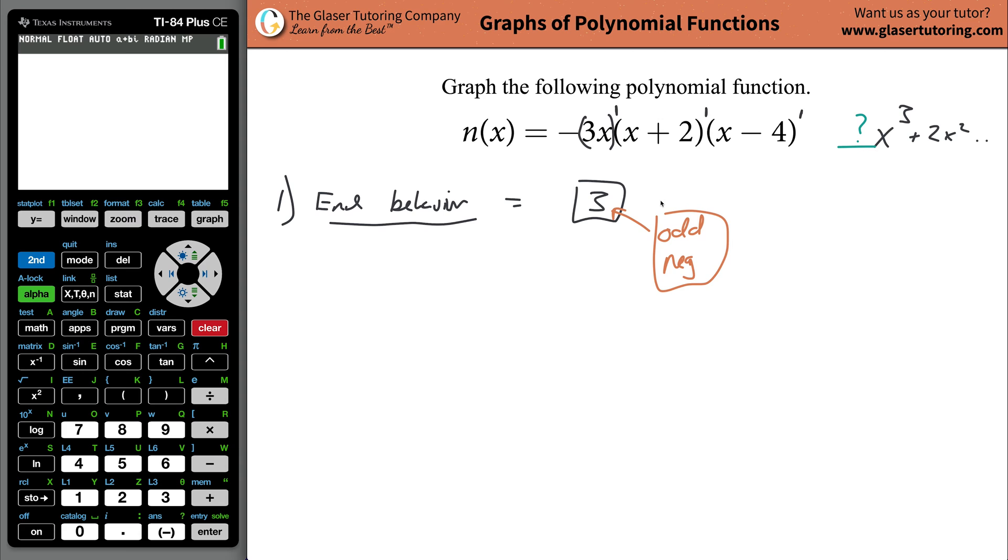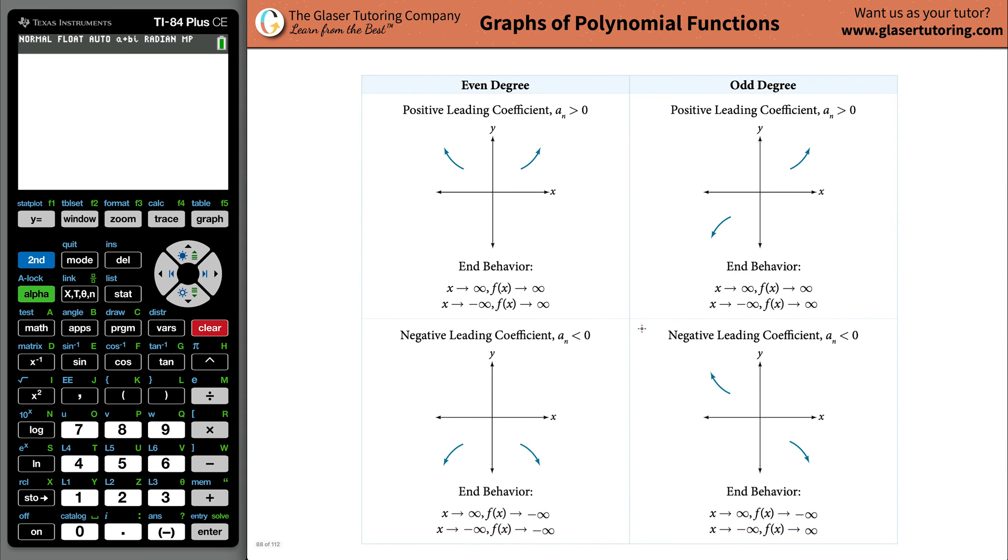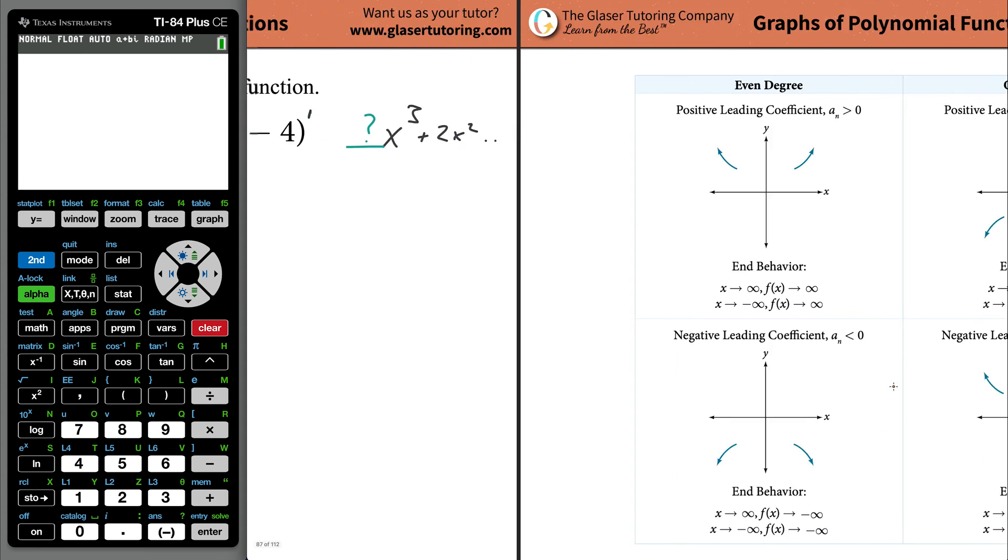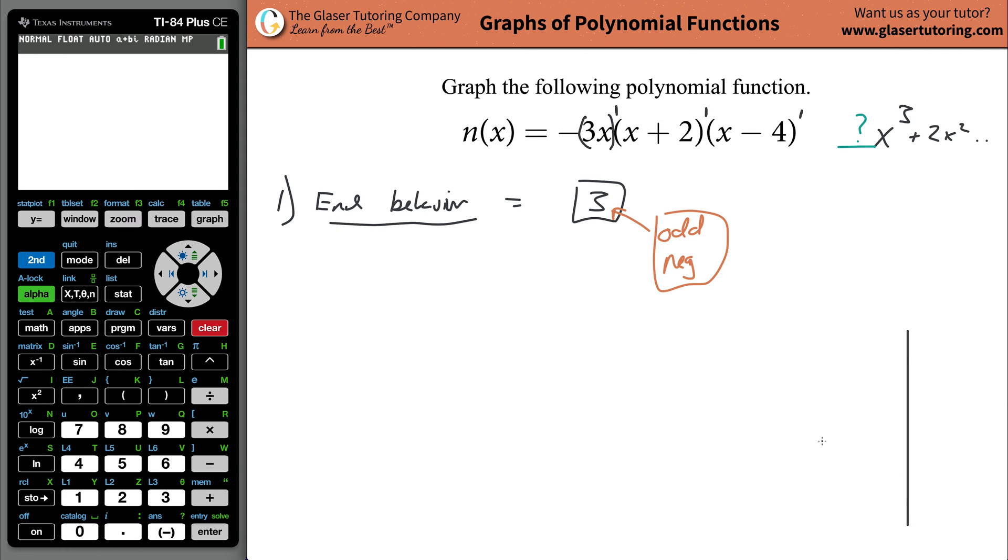With these two things now, I can start determining the end behavior. I want to find my odd degrees and I know I have a negative leading coefficient. So that means my end behavior is going to look like this, where the graph is going to trail on and on and on forever that way, and on and on and on forever in that direction. I'm going to just sketch that very quickly, create a set of axes, and plot a point up here and a point down there.